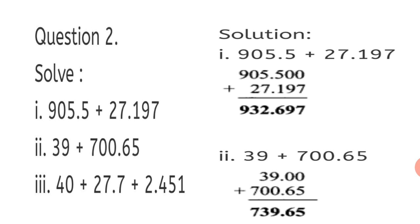Second sum. 39 plus 700.65. Add 0 plus 5 is 5. 0 plus 6 is 6. Decimal point comes down. 9 plus 0 is 9. 3 plus 0 is 3. And 7 comes down. So, 739.65 is your second answer.